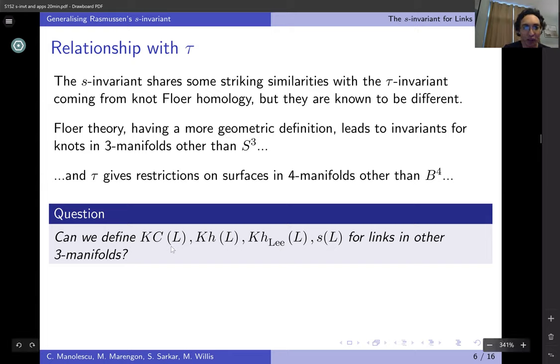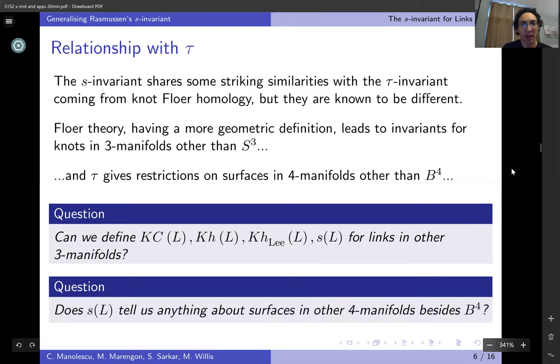Can we define all these things—the Khovanov complex, Khovanov homology, Lee homology, the S invariant—for links in other three manifolds besides just the three sphere? And similarly, does the S invariant of a link tell us anything about surfaces in four manifolds other than the four ball? That was one of the main motivations for what got us started.